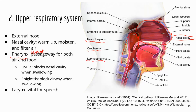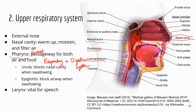The pharynx is shared by the respiratory system and the digestive system, so food also goes through the pharynx. In the pharynx there are a few important structures. The uvula — which you can see hanging from the roof of your mouth when you open wide — moves up when you swallow to block the pathway to your nasal cavity, so food doesn't go into your nose. The epiglottis comes down when you swallow to close the pathway to the trachea, so food doesn't go down your respiratory tract.